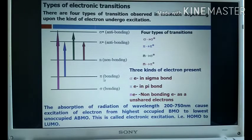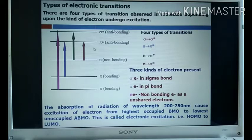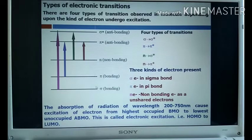Absorption of radiation with wavelength between 200 to 700 nanometers causes excitation of electrons from the highest occupied bonding molecular orbital to the lowest unoccupied antibonding molecular orbital. This is called electronic excitation — from HOMO to LUMO. HOMO means highest occupied molecular orbital, which is the bonding molecular orbital, and LUMO means lowest unoccupied molecular orbital, which is the antibonding orbital.